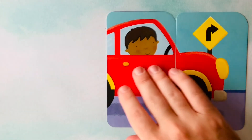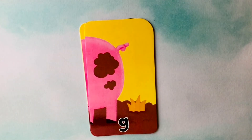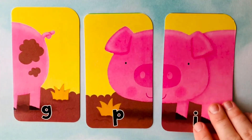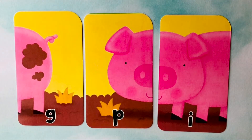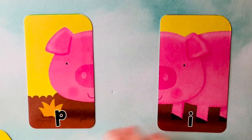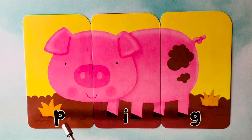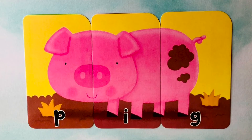Goodbye, C. See you later, A. After a while, R. Looks like we're starting off with a G. P-I-G. We also have an I, and our third letter is a P. I think we're spelling pig. Pig is spelled with a P, it follows with an I, and it finishes with a G. P-I-G is pig. P-I-G spells pig.